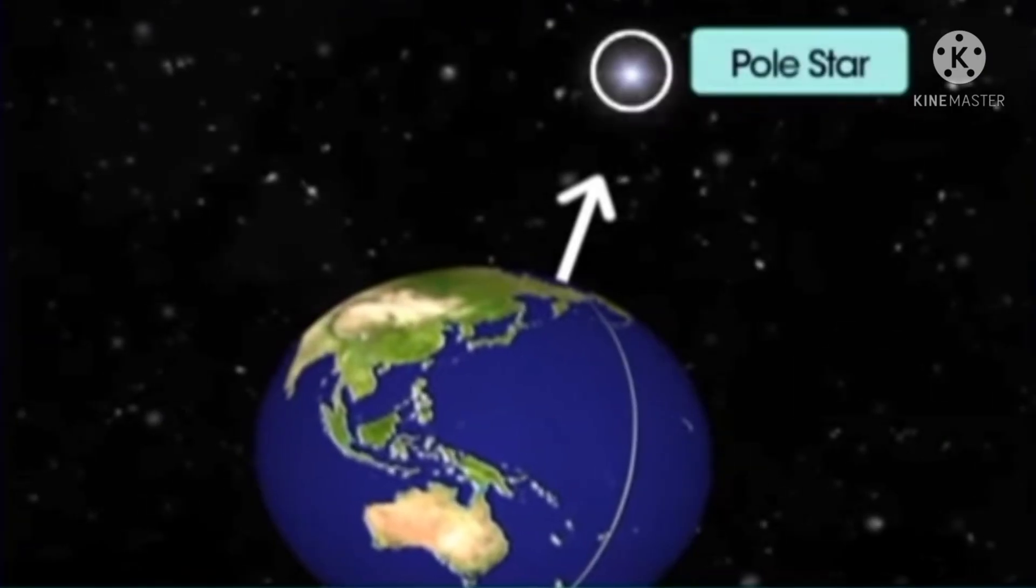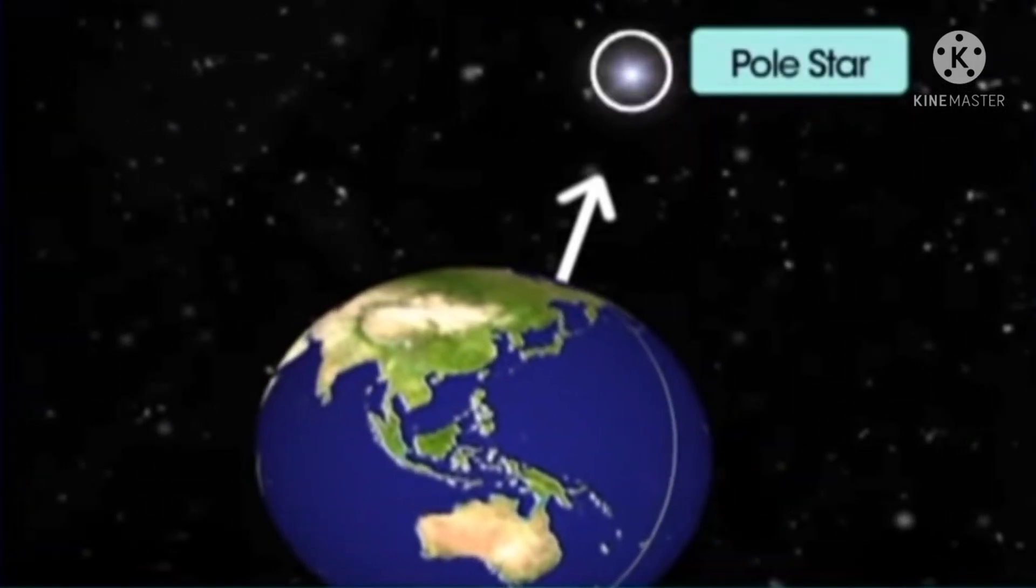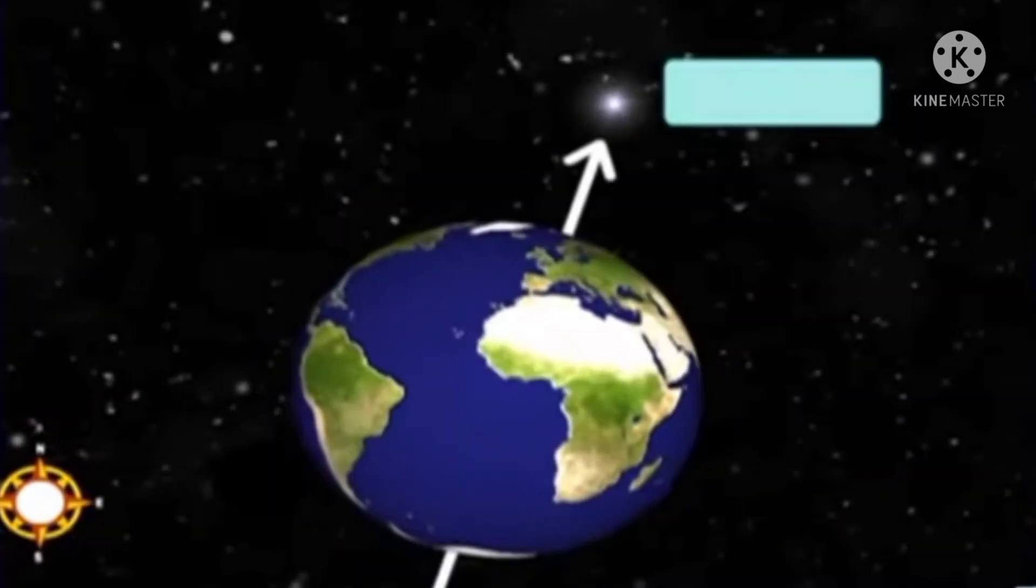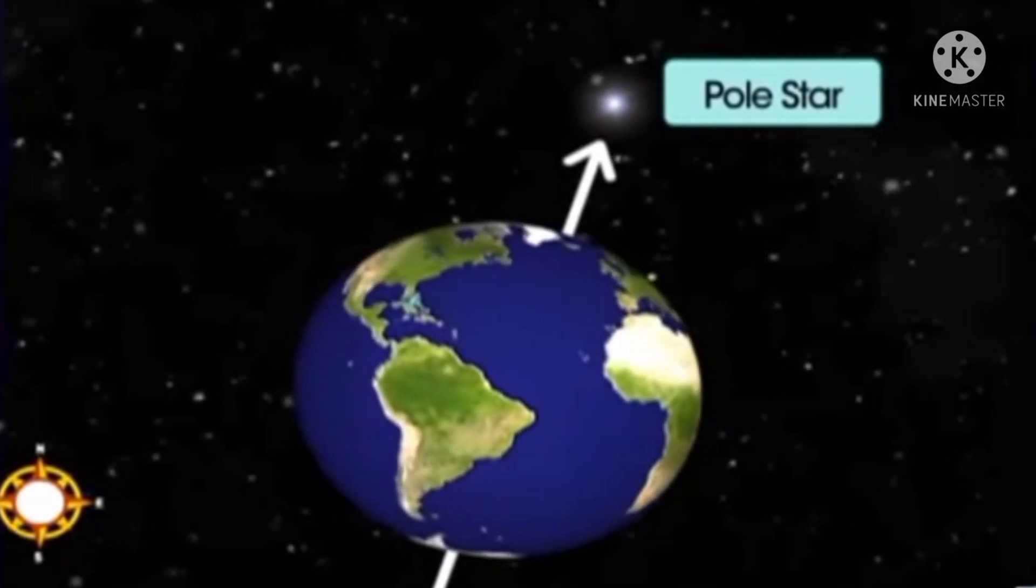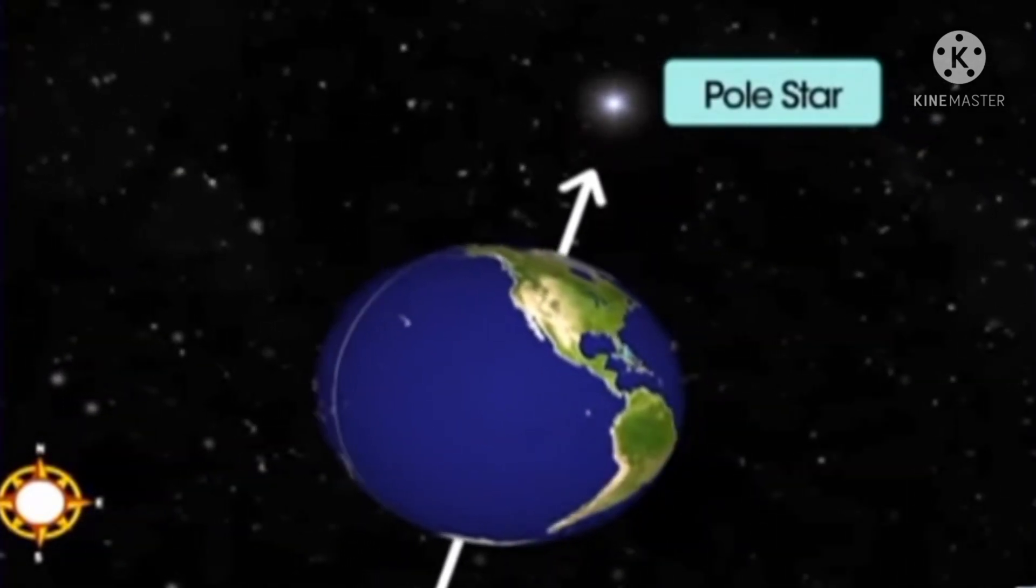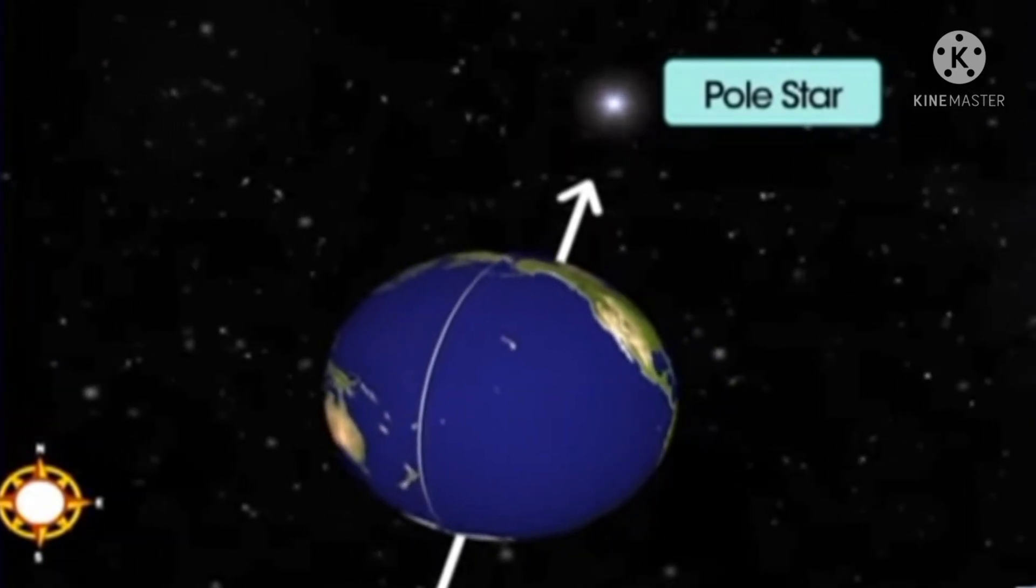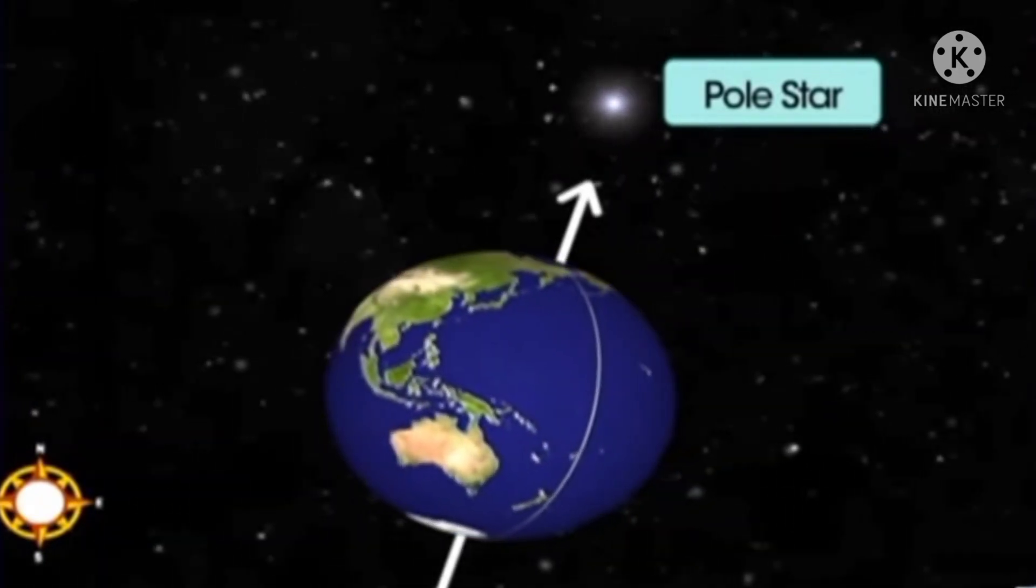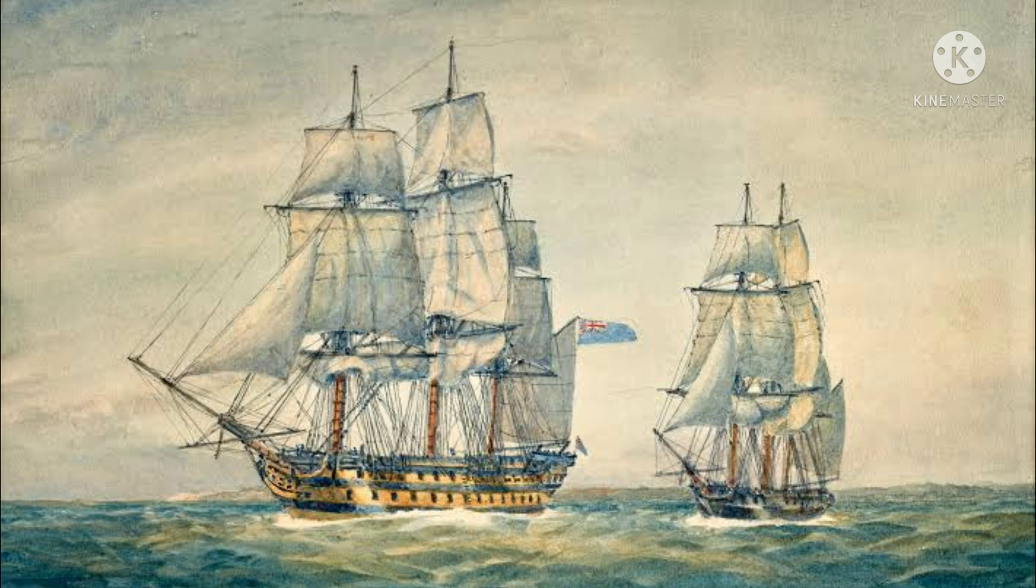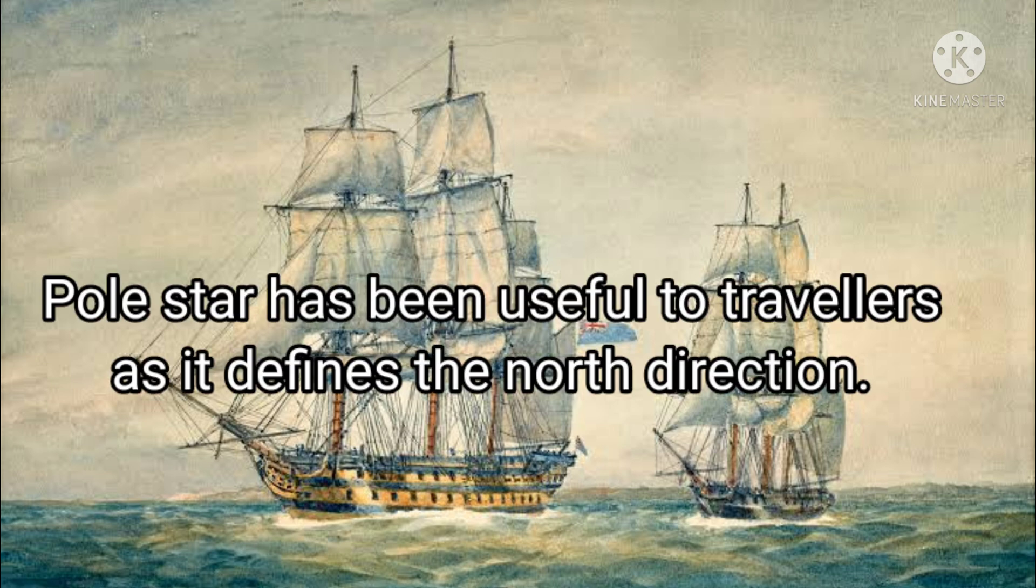Now, children, we will learn about the Pole Star. The Pole Star or Dhruv Tara is a special star present in the northern hemisphere. This star, unlike other stars, appears to remain fixed at one place. This is so because it lies along the axis of rotation of the Earth. Because of this special feature, this star has been useful to travelers as it defines the north direction.